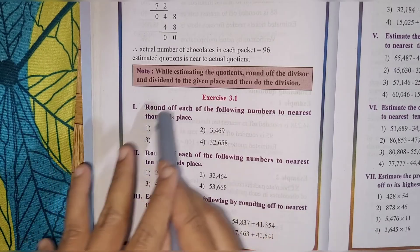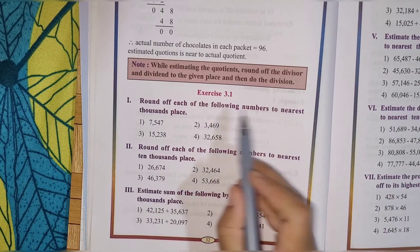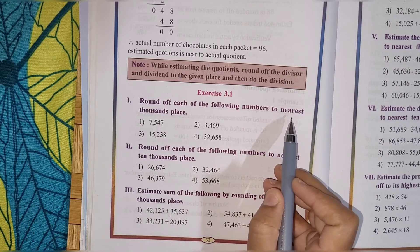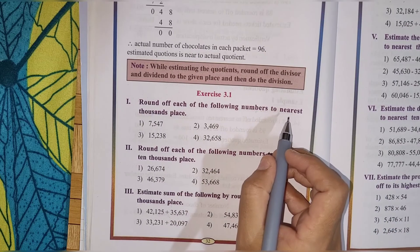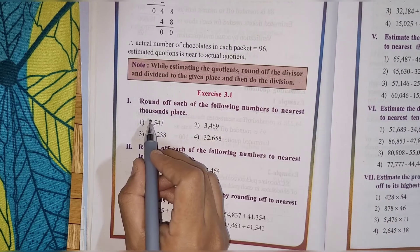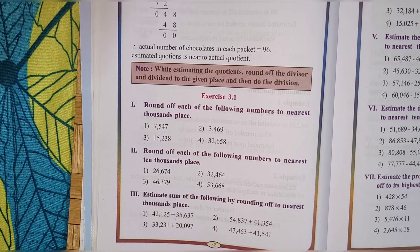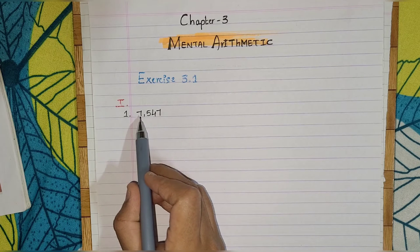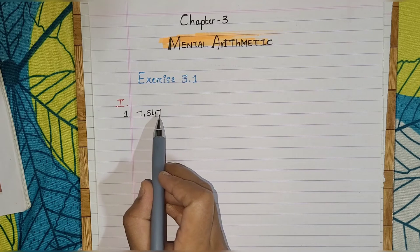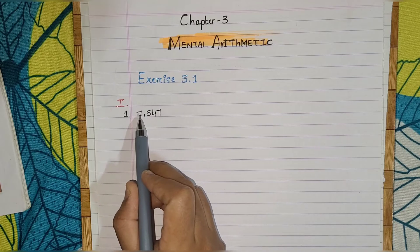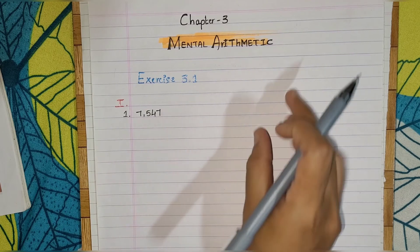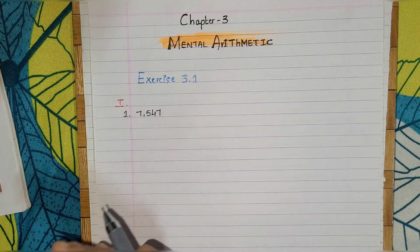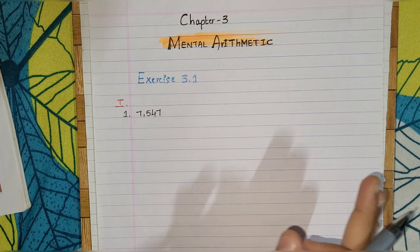You have to round off each of the following numbers to the nearest thousands. You have to read the question properly — they are asking you to round off the number to the nearest thousand place. So before going to solve this, we have to remember some points. We are going to see how to round off a number to the nearest thousand place.